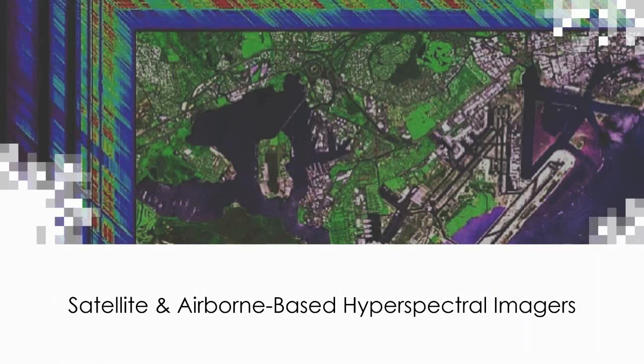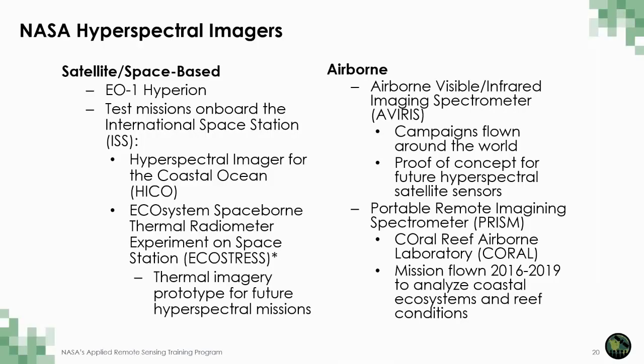Now that we have given you a brief review of what hyperspectral data are and why they're useful, let's move on to discussing some specific hyperspectral sensors. There are multiple satellite-based sensors, including EO-1 Hyperion, which was a very popular system, and two test missions onboard the International Space Station: the Hyperspectral Imager for the Coastal Ocean (HICO), and the Ecosystem Spaceborne Thermal Radiometer Experiment on Space Station (ECOSTRESS). There are others flown on airplanes, including the Airborne Visible Infrared Imaging Spectrometer (AVIRIS) and PRISM onboard the Coral Reef Airborne Laboratory (CORAL).